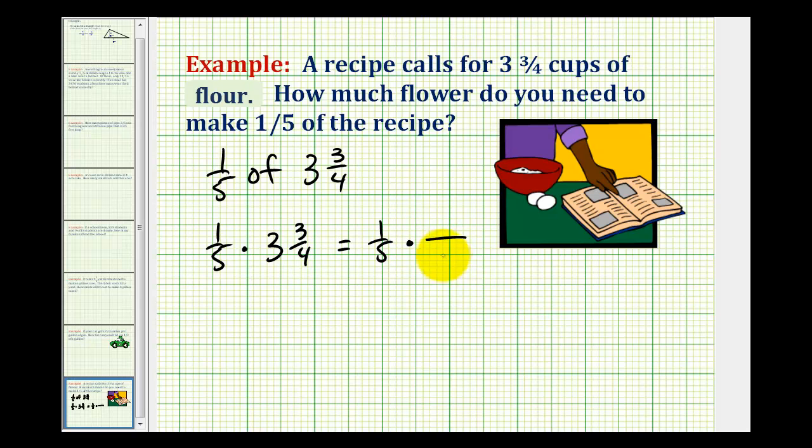So the denominator is going to stay four. Our numerator is going to be four times three, that's twelve, plus three. So we have fifteen-fourths.